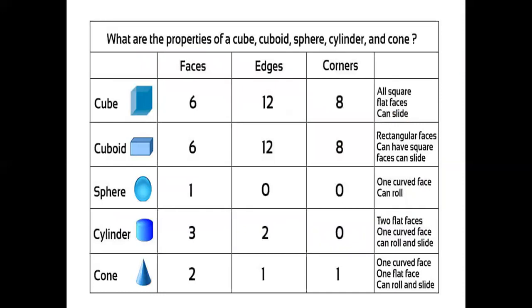What are the properties of a cube? Cuboid, sphere, cylinder and cone. Cube, 6 faces, 12 edges, 8 corners. Cuboid, 6 faces, 12 edges, 8 corners.